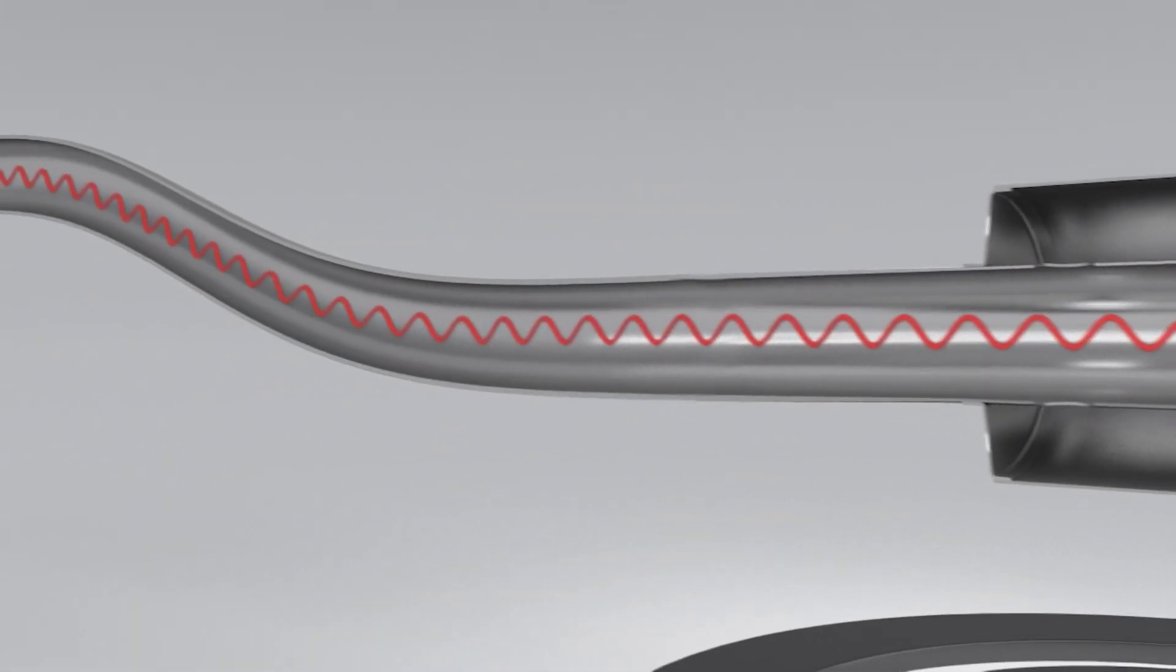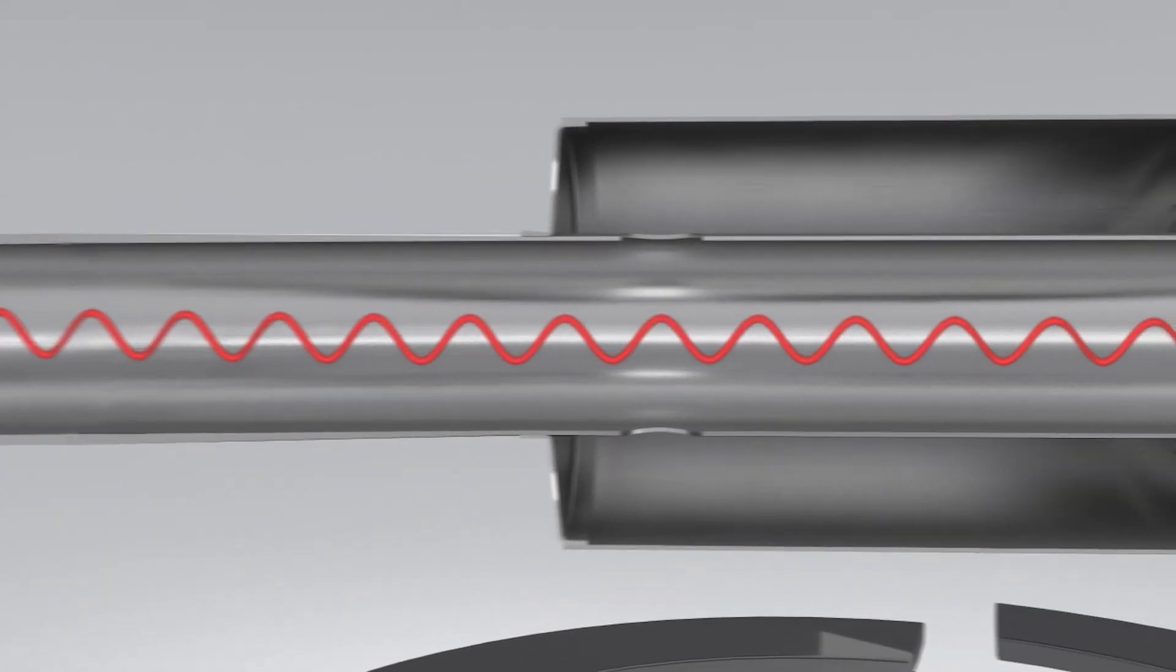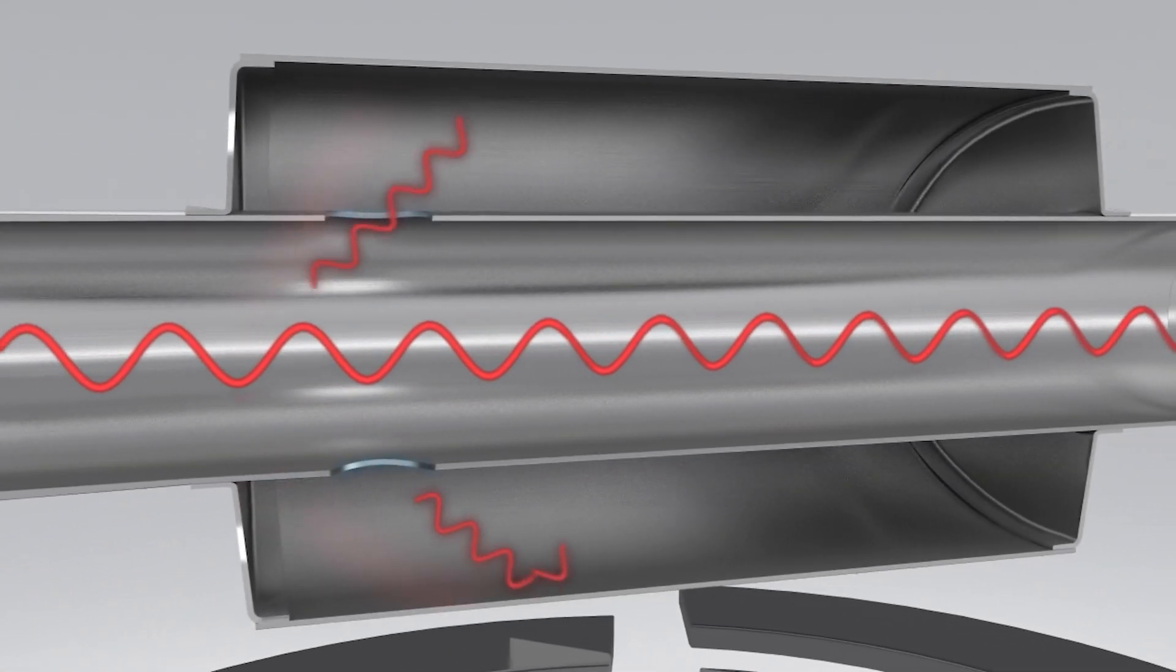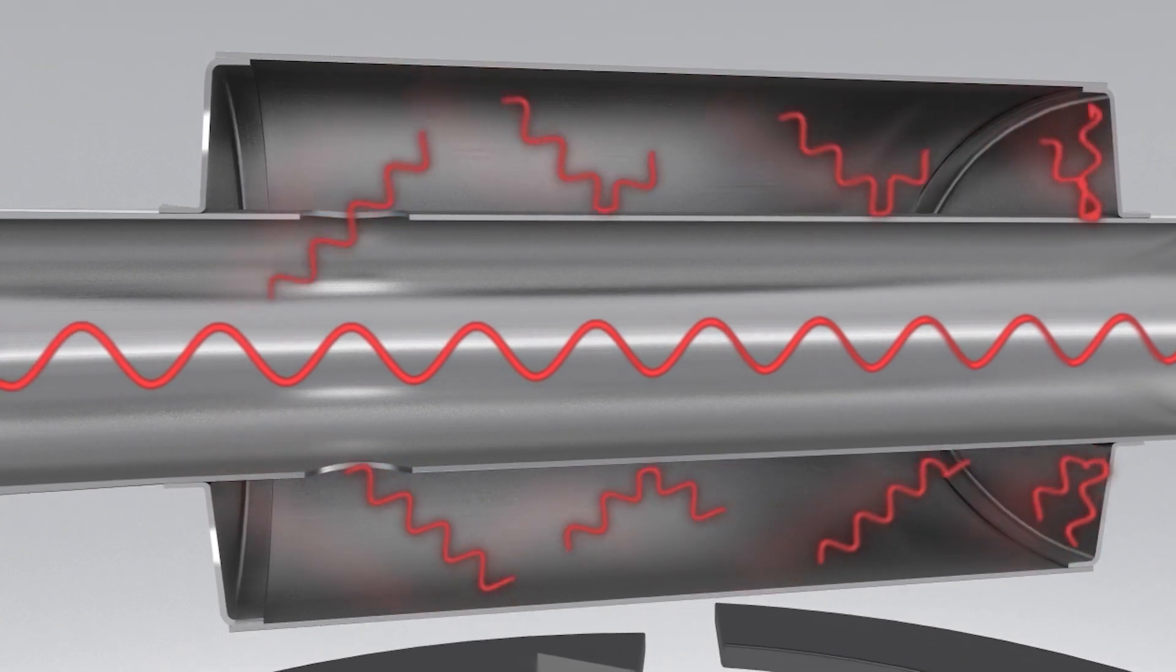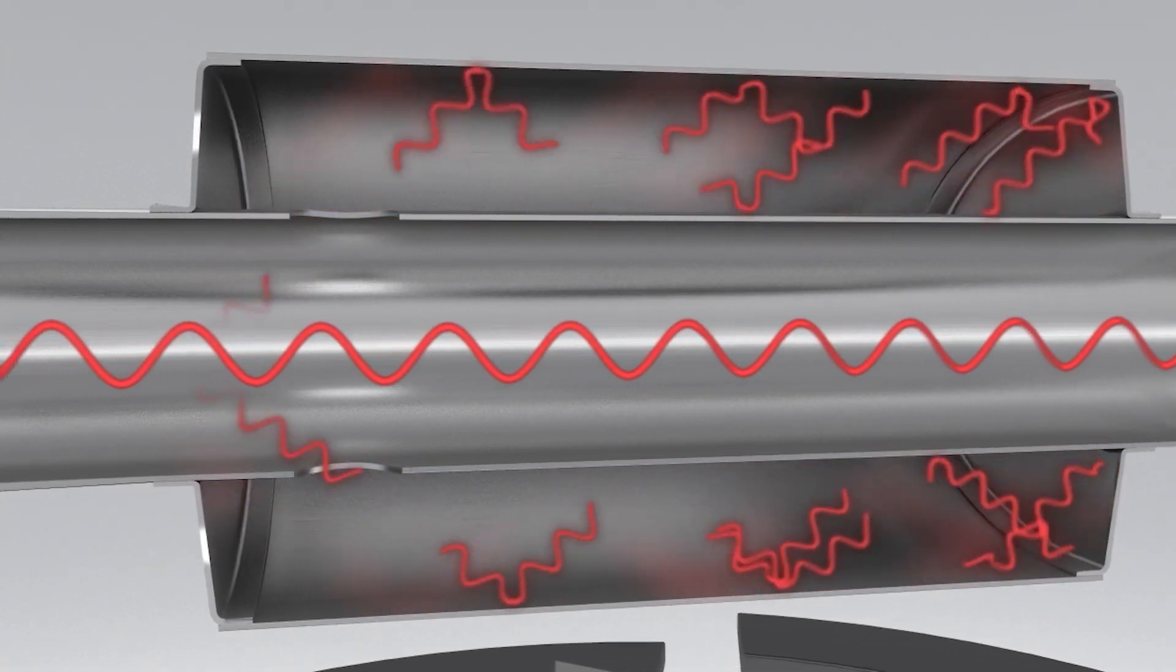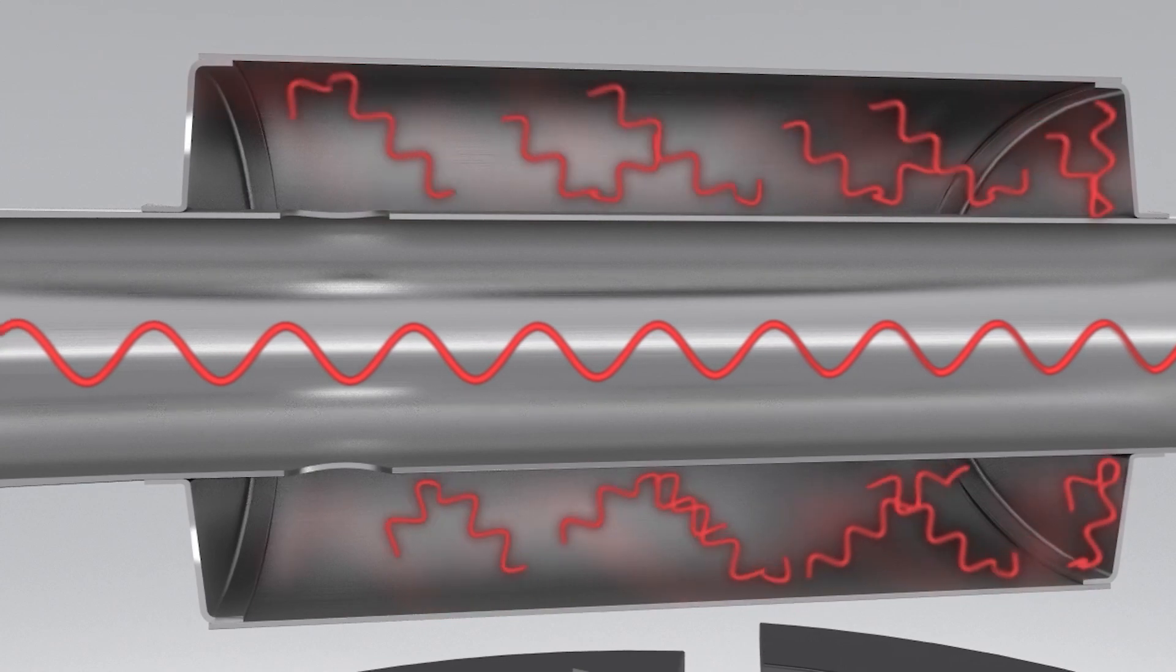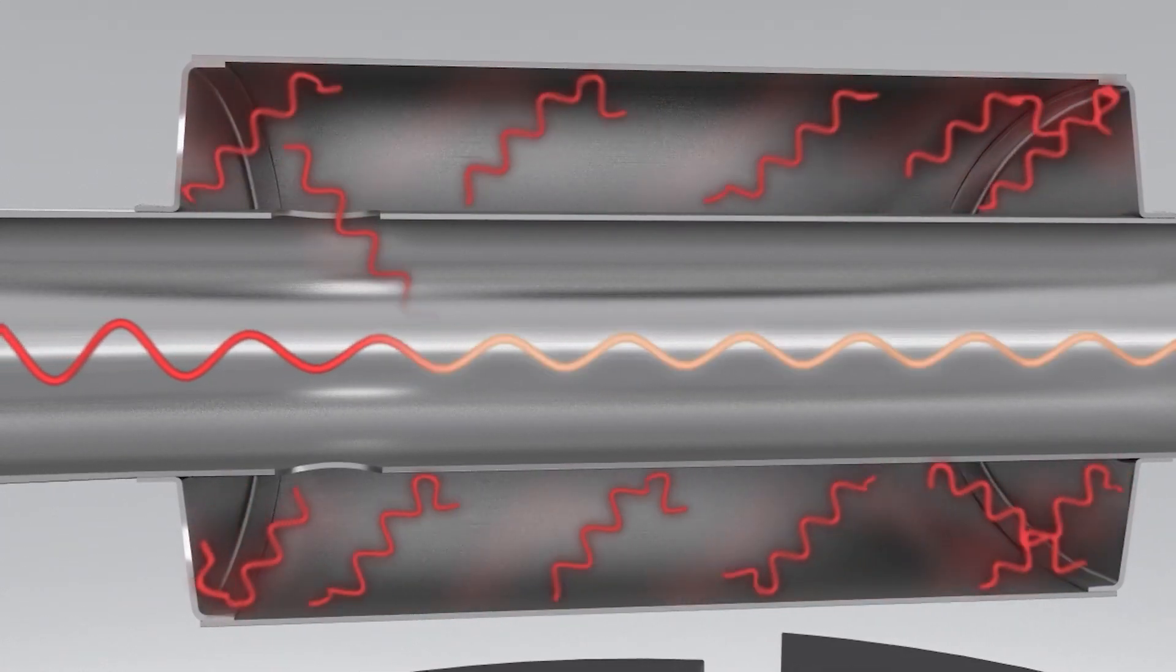Exhaust gas enters into our 180 technology resonator chamber through strategically located ports. By controlling the size and location of these ports, as well as the size of the chamber, we control when the sound waves re-enter the ports to join the free-flowing exhaust gases.